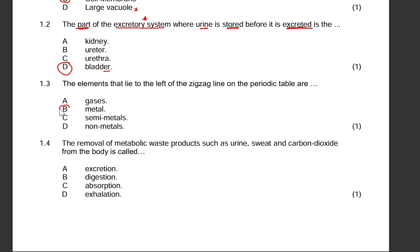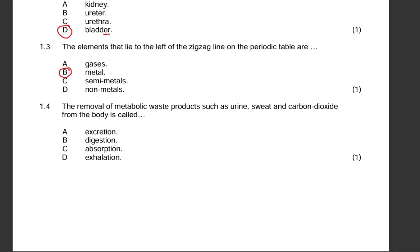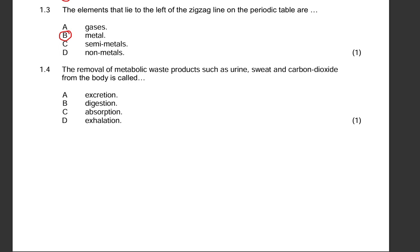1.3: the elements that lie to the left of the zigzag line on the periodic table. Our answer would be the metals, not the gases and not non-metals or semi-metals. 1.4: the removal of metabolic waste products such as urine, sweat and carbon dioxide from the body is called what? That is obviously excretion.